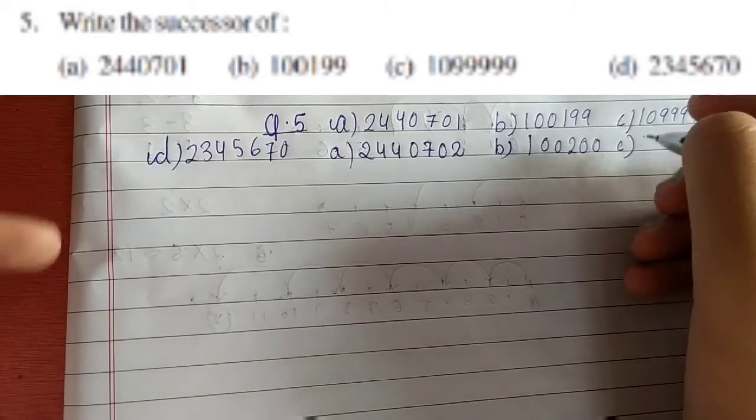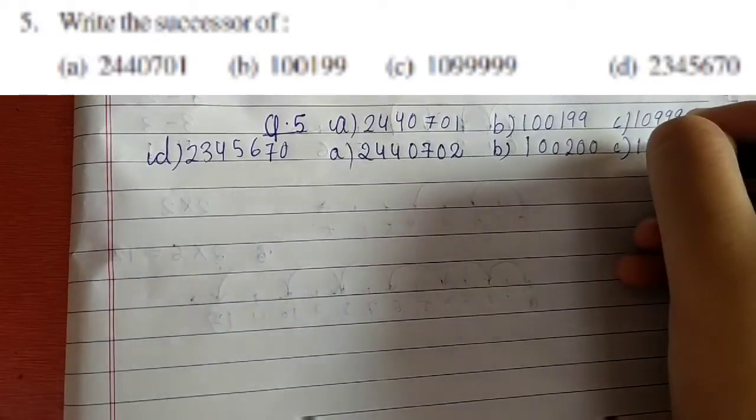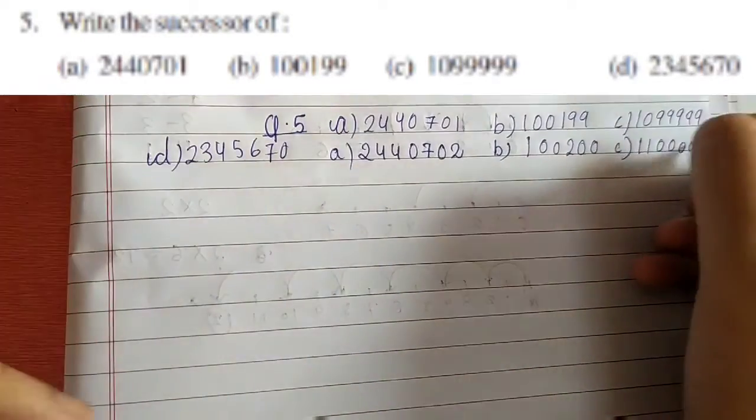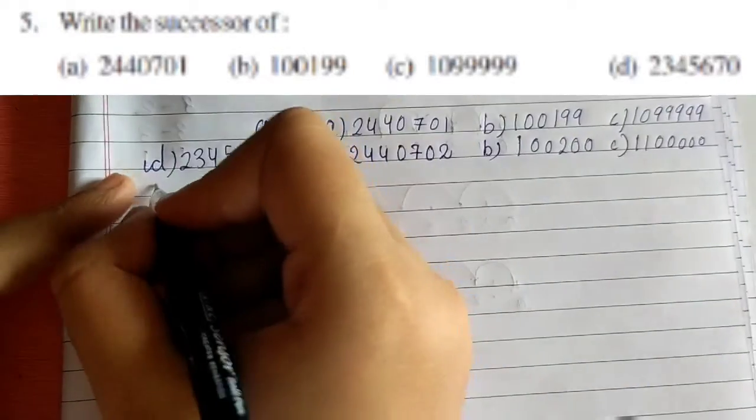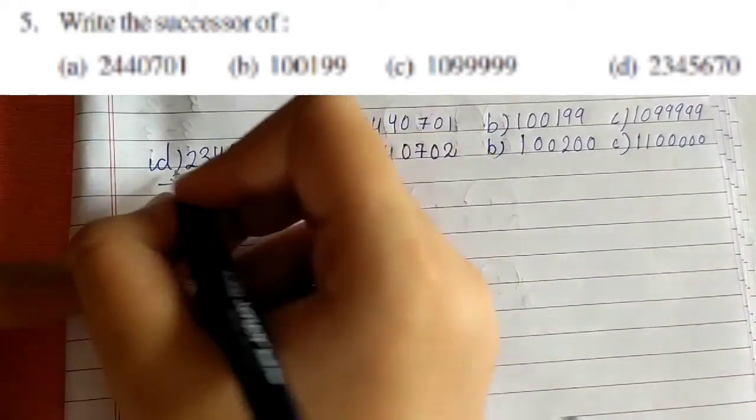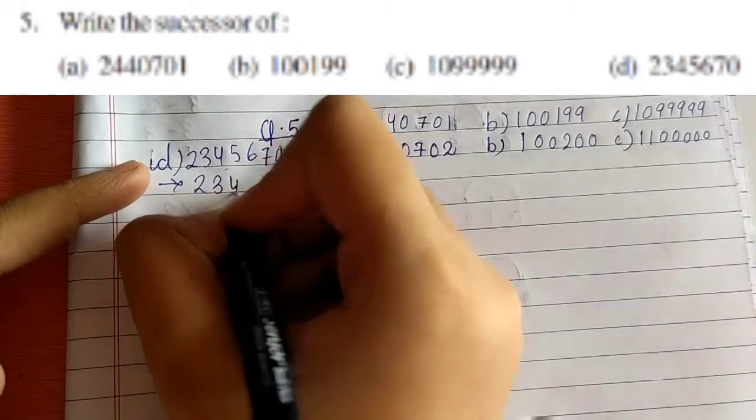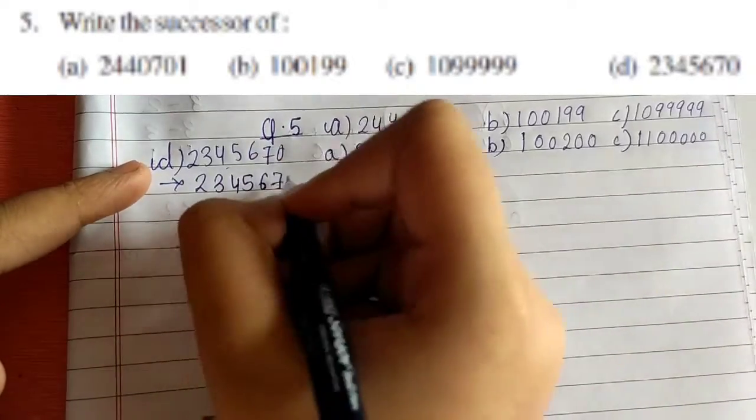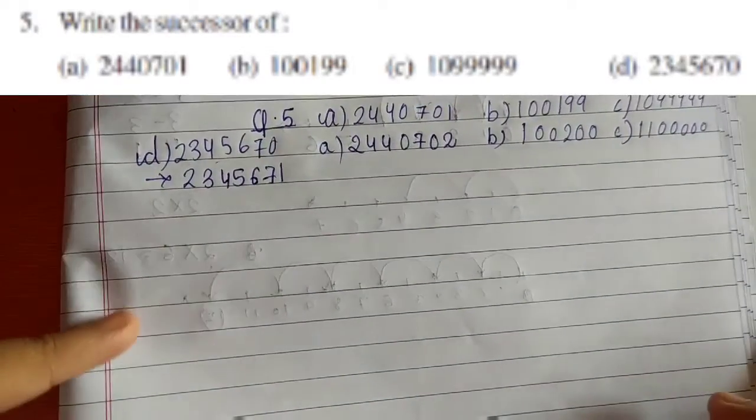Now we have part (d), so it is 2345670. It will become 2345671. So this was the solution for this question.